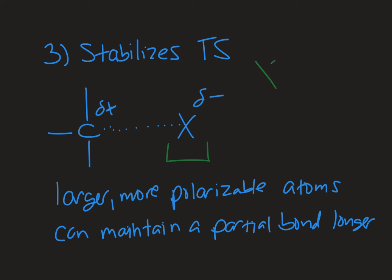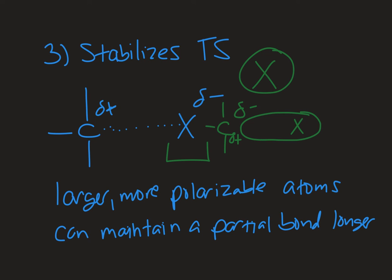If we think about our X group — say it's just a halogen — it's spherically shaped, but because the carbon is developing a partial positive charge, X can become polarized so that there's more electron density on the side close to the carbon, maintaining a partial bond for longer. There's then less of a partial positive on the carbon and it's less destabilized as the transition state continues. So here's my carbon with the partial positive charge, and the electron density of X is going toward that carbon to help stabilize it. The larger an atom is, the more polarizable it is and the more that stabilization is possible.